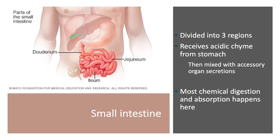The small intestine is divided into three different regions: the duodenum, the jejunum, and the ileum. Remember from the last lecture, the duodenum is actually part of the upper GI tract, so the jejunum and the ileum are part of the lower. To help you remember the order, just do the D-J-ileum — duodenum, jejunum, ileum.